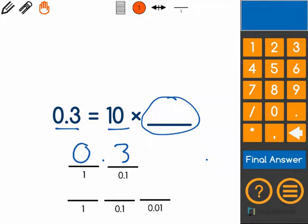meaning that we started with a different number, which is the blank, and multiplied by 10 in order to get to 0.3.